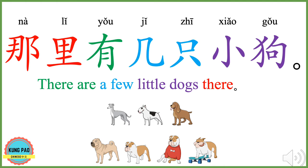那里有几只小狗。 那里 means there. 有 means have, has, there is or there are. 几 here means a few. 只 is a measure word for dog. 小狗 means little dog. 那里有几只小狗 means there are a few little dogs there. Now you can try.